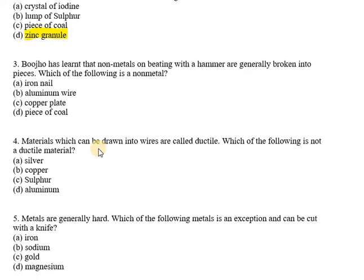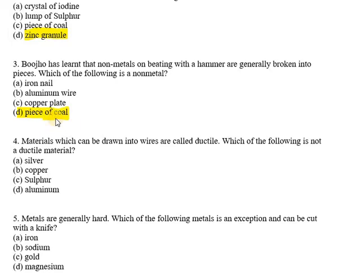Question number 3: Bujo has learned that non-metals on beating with a hammer are generally broken into pieces. Which of the following is a non-metal? Iron nail is a metal, aluminum wire is a metal, copper plate is again a metal, but piece of coal contains carbon, which is a non-metal. Therefore it will get broken into pieces, and we consider it brittle.